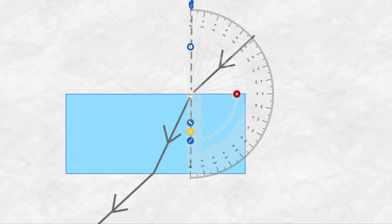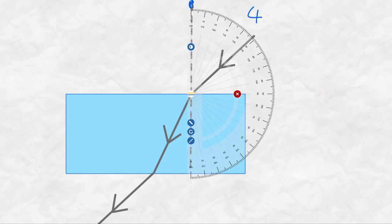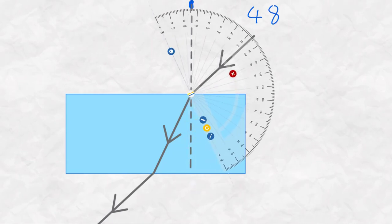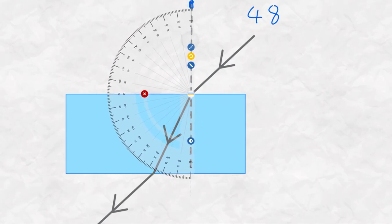To measure the angle of incidence, line up zero degrees along the normal and read off the protractor to the incident ray. The same process is used to measure the angle of refraction. The zero degrees is lined up on the other side of the normal and the refracted ray's angle is read off.